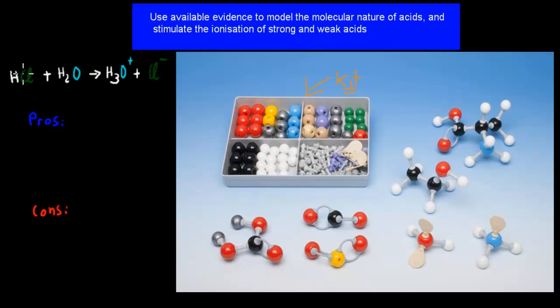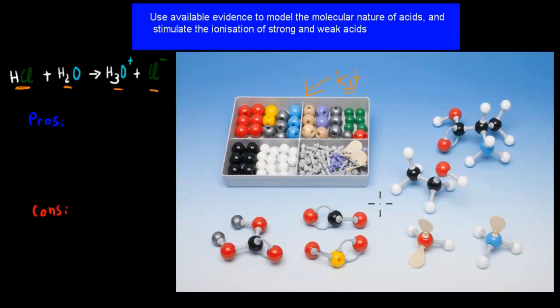For example, a strong acid: we have hydrogen chloride and water, and that combines to form hydronium ions and chloride ions. This is the ionization process you're going to do with just your model kit.